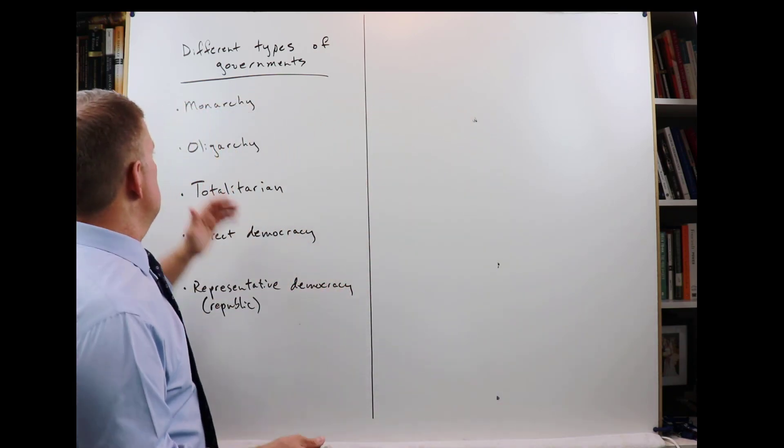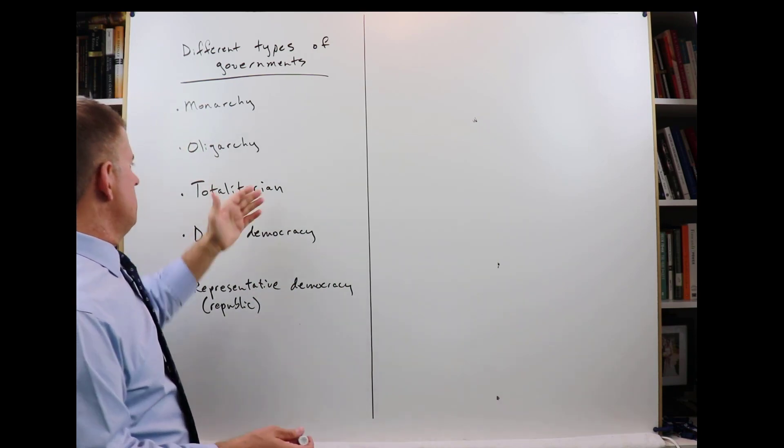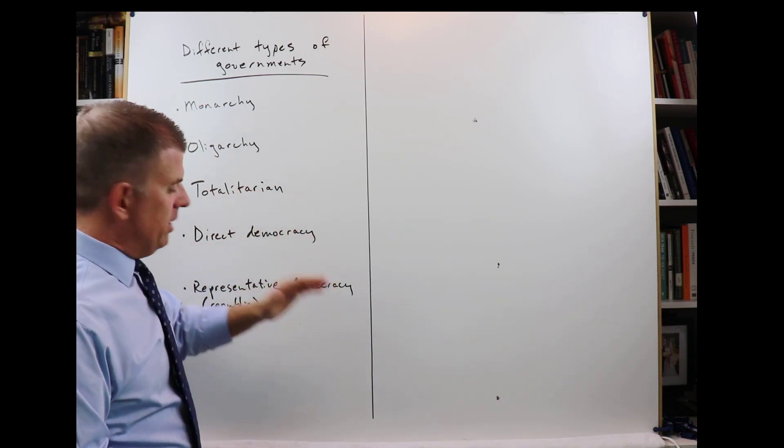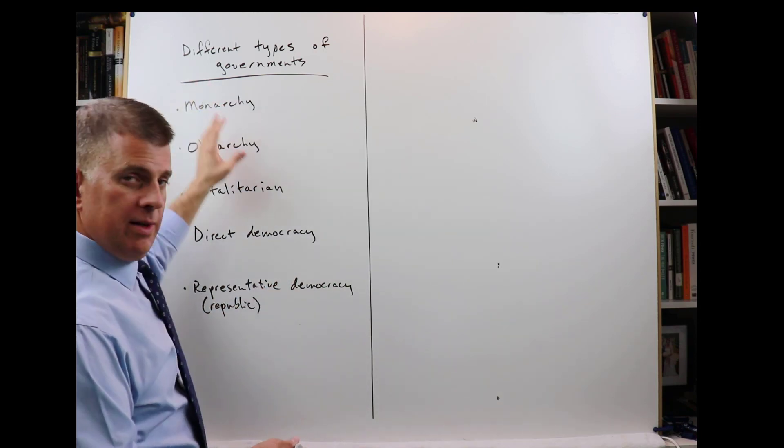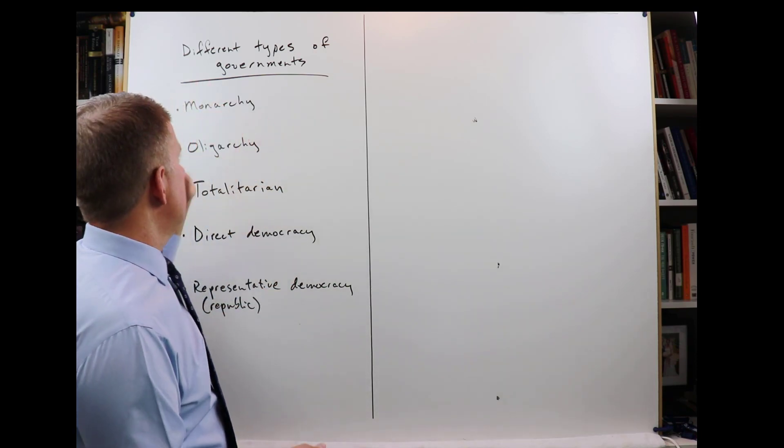Now, the list of different types of governments: monarchy, oligarchy, totalitarian government, direct democracy, and representative democracy. So let's quickly take a look at these.